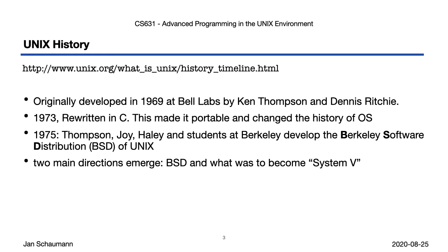Eventually, sometime around 1973 or so, UNIX itself was rewritten in C. What was it originally written in? Early on, UNIX was written in assembly for the specific target platform and hardware. Only as Ken Thompson and Dennis Ritchie developed C as a systems programming language did they decide to rewrite the OS to take advantage of this new high-level language, making the operating system portable — no longer tied to the hardware and recompilable for other platforms.